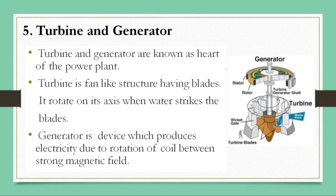The fifth component is turbines and generators, known as the heart of the power plant because they are very important components. A turbine is a fan-like structure having several blades that rotates on its axis when water strikes the blades. The generator is a device which produces electricity due to the rotation of a coil between a strong magnetic field. The turbine and generator are attached to each other.